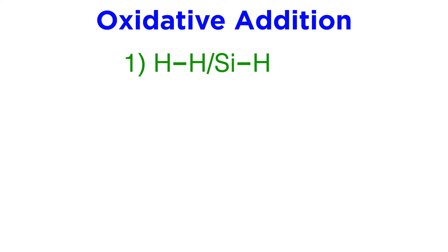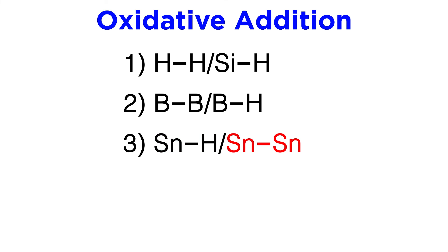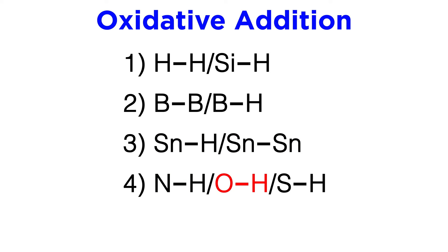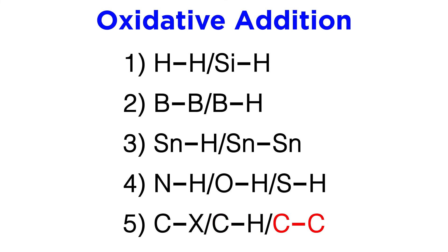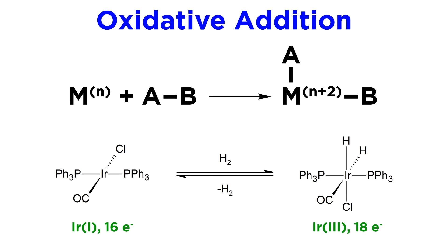We should be aware that in addition to the H-H and Si-H bonds we just examined, this mechanism also commonly involves B-B, B-H, Sn-H, Sn-Sn, N-H, O-H, S-H, and C-X bonds, so we should be prepared to see this type of chemistry when these bonds are present. C-H activation is more difficult, but it is synthetically very important. C-C bond activation is rare, but has been shown in some cases. We should also note that d0 metals can't participate in oxidative addition, because they can't be oxidized in the same way as metals with many d electrons, as they have no d electrons to lose. And that covers an introduction to oxidative addition.